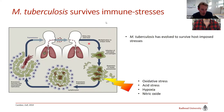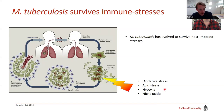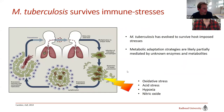Since MTB has no natural reservoir other than our lungs, it must cope with macrophage-released stresses: oxidative stress, acid stress, hypoxia, and nitric oxide. We reasoned there must be metabolic adaptation strategies to deal with these stresses, some of which might still be unknown — unknown metabolites we were hunting for. We cultured MTB on filters, which allows rapid transfer between conditions without washing or centrifugation, enabling rapid metabolome quenching.